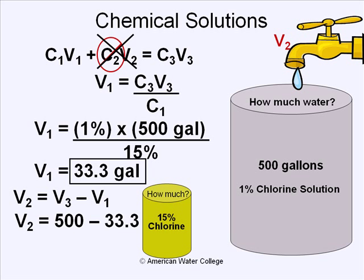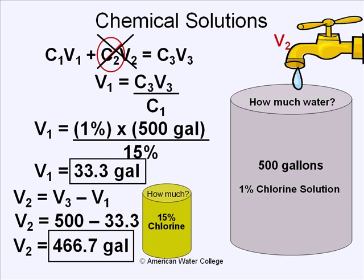Working through the math, we find we'll be adding 466.7 gallons of water. So in this problem, if you combine 33.3 gallons of a 15% chlorine solution with 466.7 gallons of water, you end up with 500 gallons of a 1% chlorine solution.